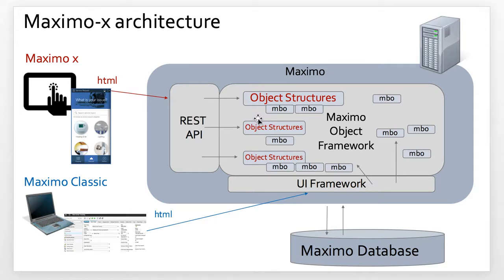An object structure represents a hierarchy of Maximo database tables or objects joined together via a Max relationship. A Max relationship is simply a SQL WHERE clause. With Maximo X, these object structures are utilized by the REST APIs to access both the MBOs and the Maximo data themselves. So you can see the importance of object structures in our Maximo X architecture.